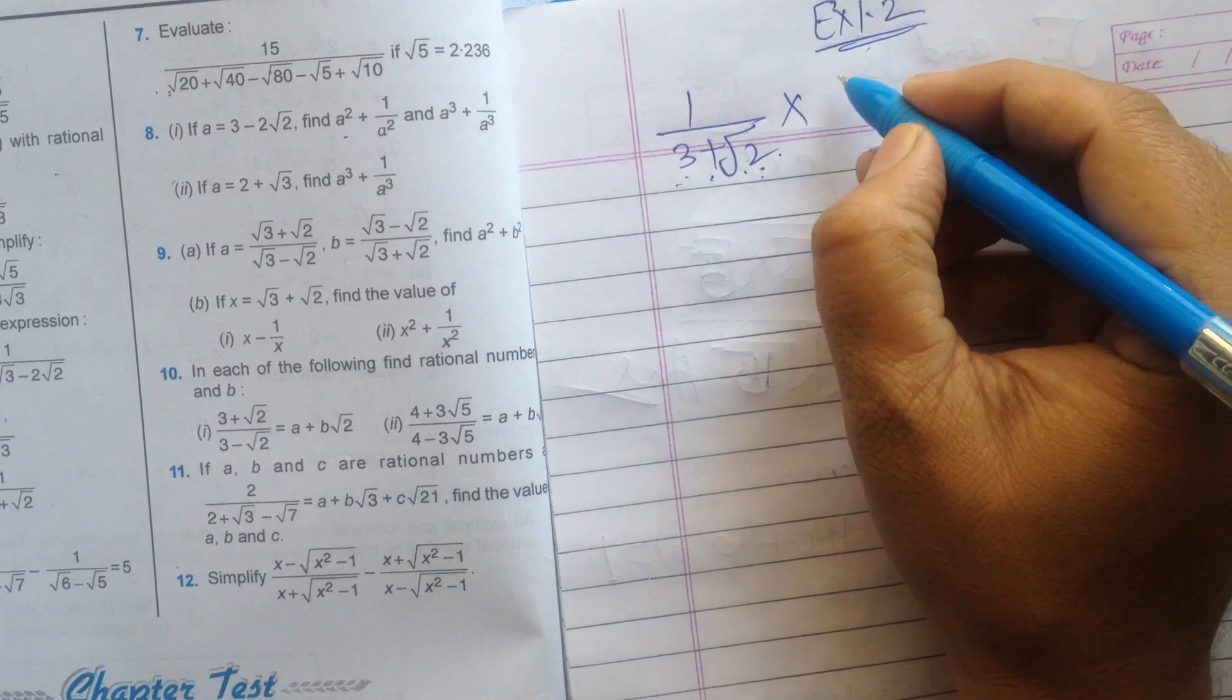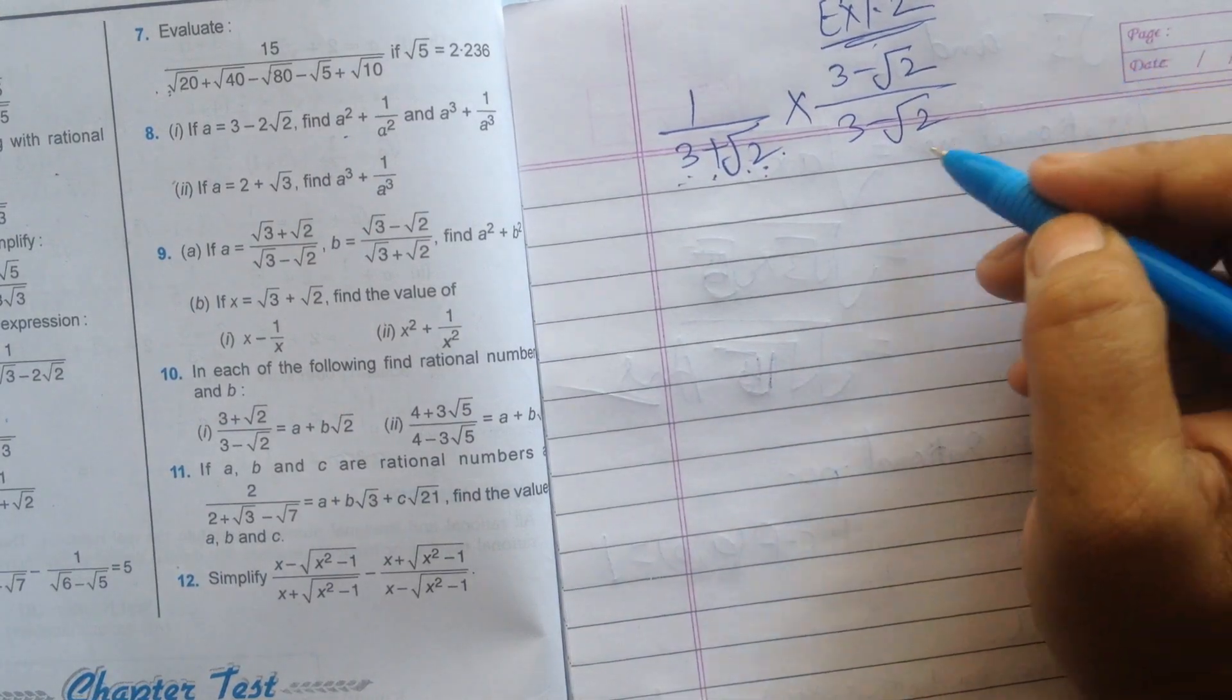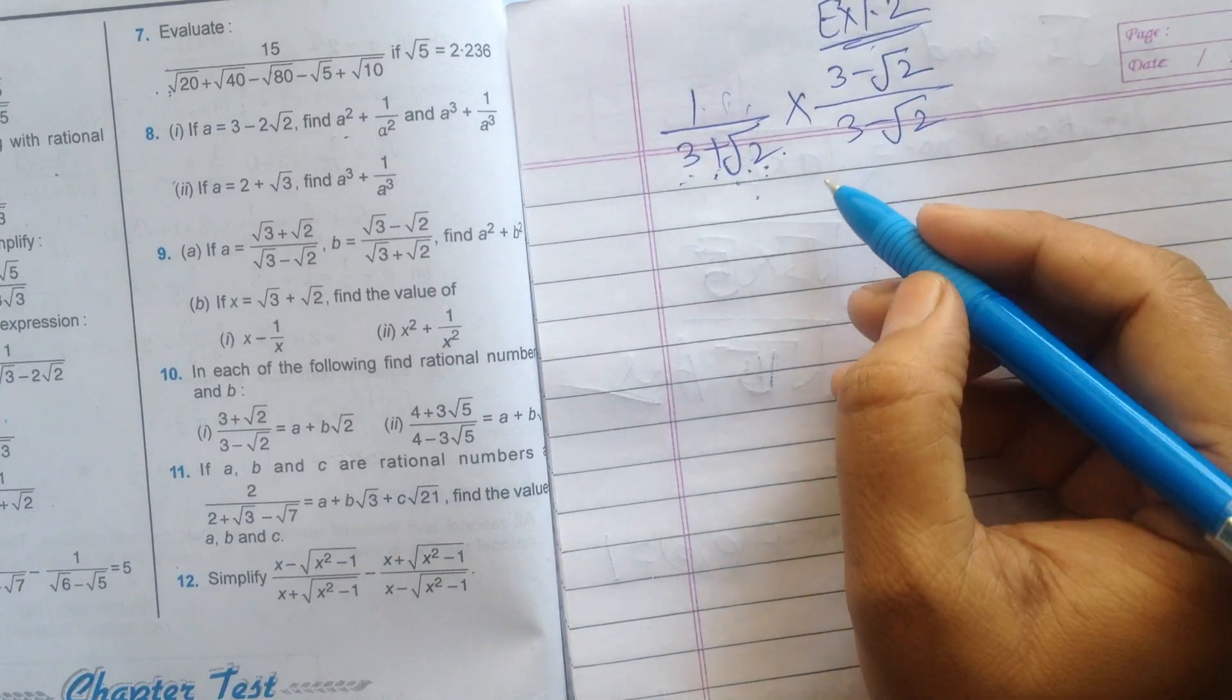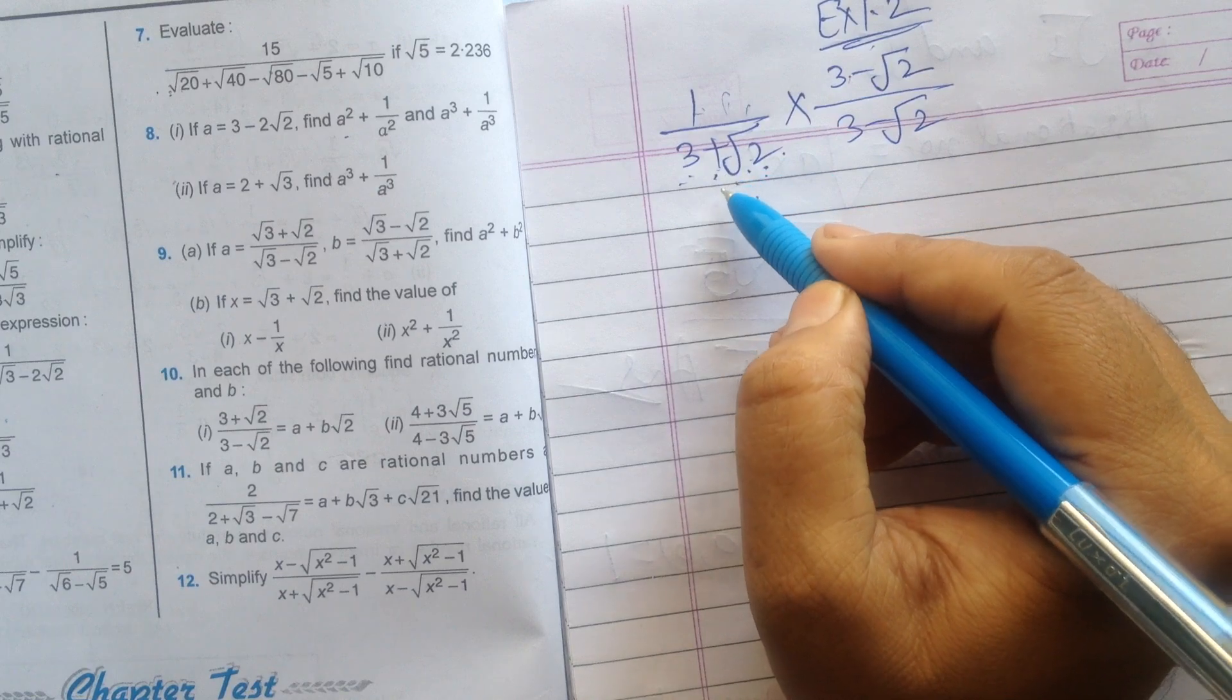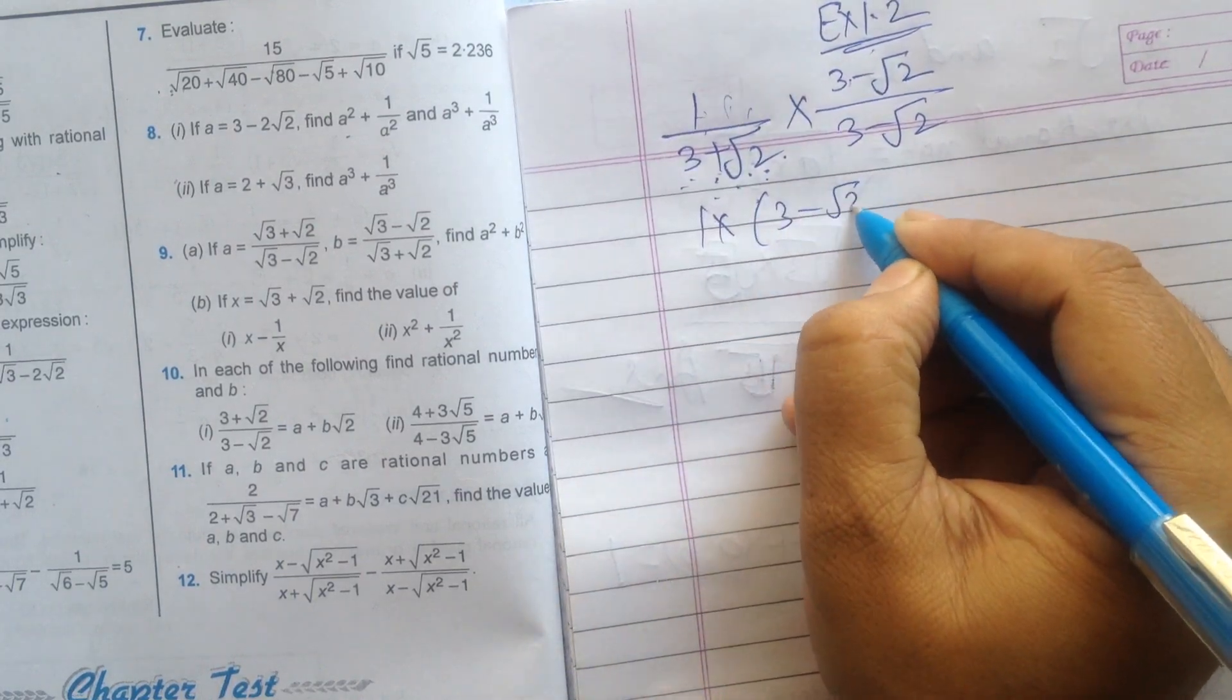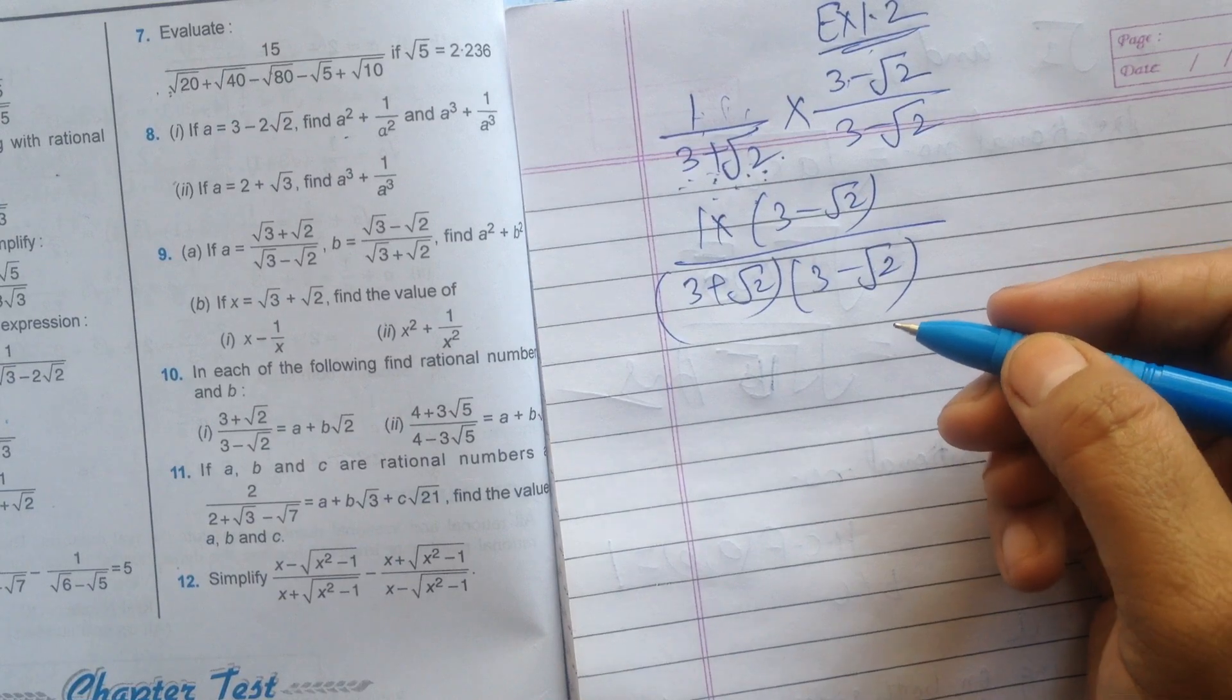Then 3 minus square root 2, we have to multiply and divide by the same. Then there will be no effect on the actual number. These both will cancel, so we will get the same number. The second step is numerator will be multiplied by the numerator, denominator will be multiplied by denominator.